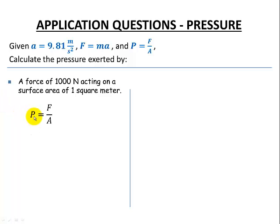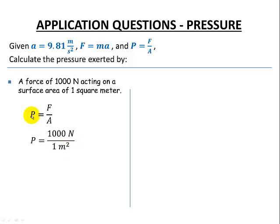Here's our formula for pressure: P equals F over A. Let's enter our given values. We were given that the force was 1,000 newtons and our area was one square meter — these are the required units for the pressure formula in the metric system: force in newtons, area in meters squared. So we have 1,000 pascals.